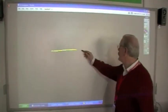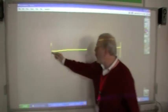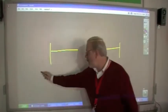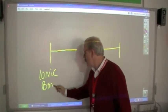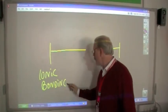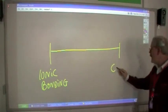So if we drew a line, we could say that at one end of the line, we have ionic bonding. And at the other end, we have covalent.